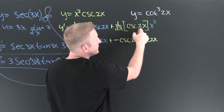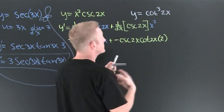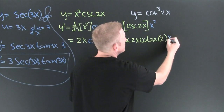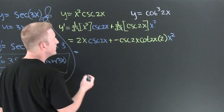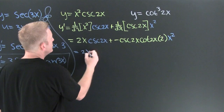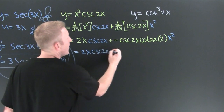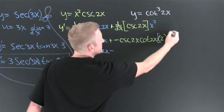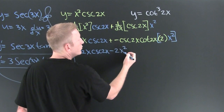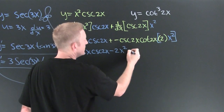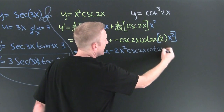— times the derivative of the inside, which is 2, still multiplied by x². Cleaning it up: 2x times cosecant(2x) minus 2x² times cosecant(2x) times cotangent(2x).